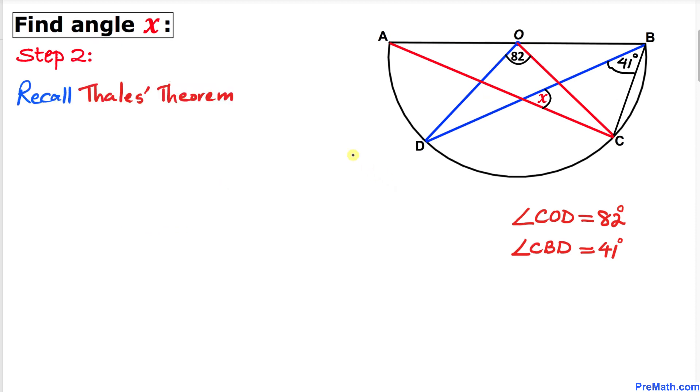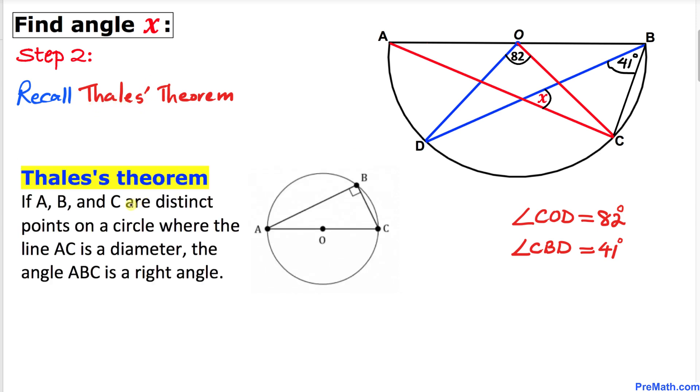And now let's recall Thales' theorem. Here's Thales' theorem: If points A, B, and C are distinct points on a circle where the line AC is a diameter, then angle ABC is a right angle. As you can see in this diagram, this angle is 90 degrees.